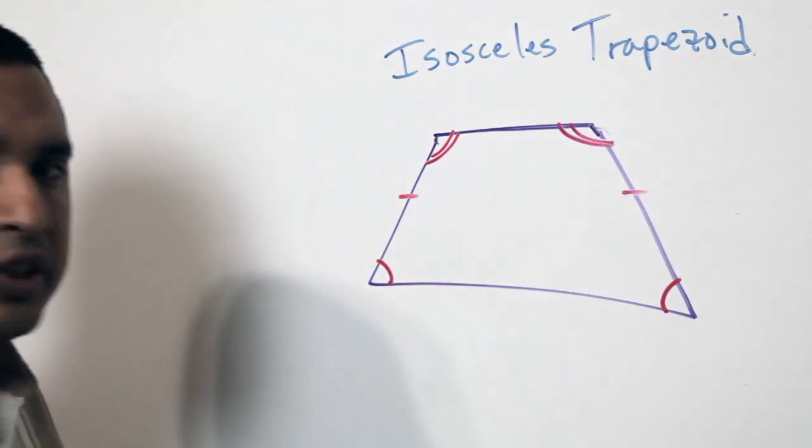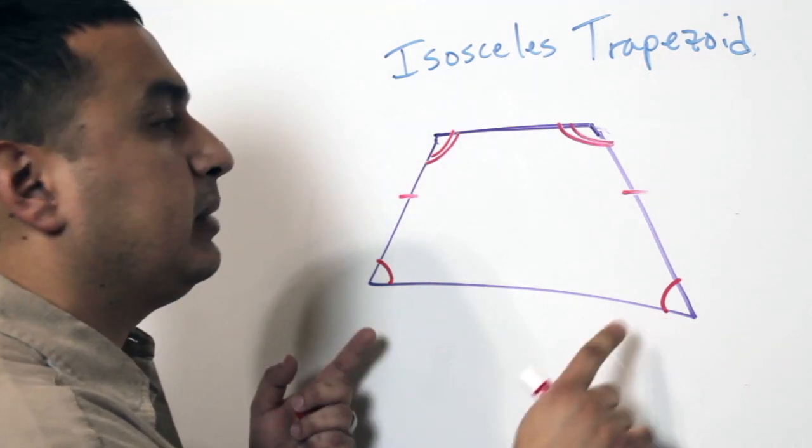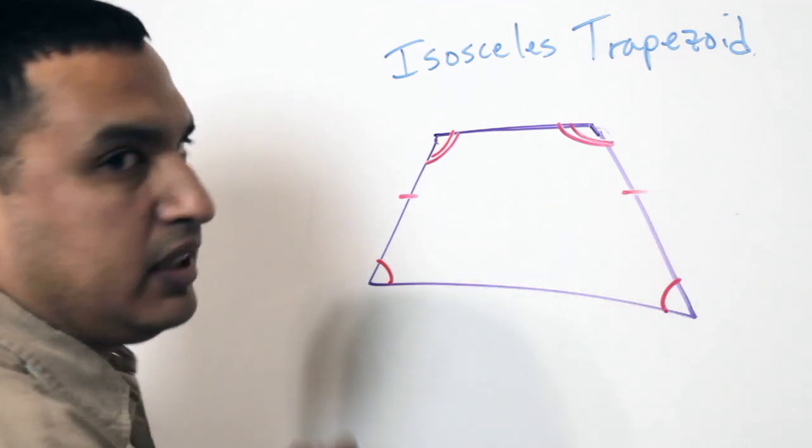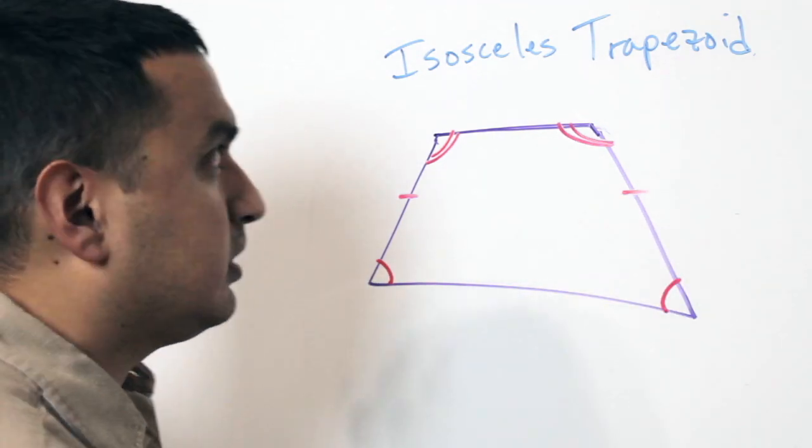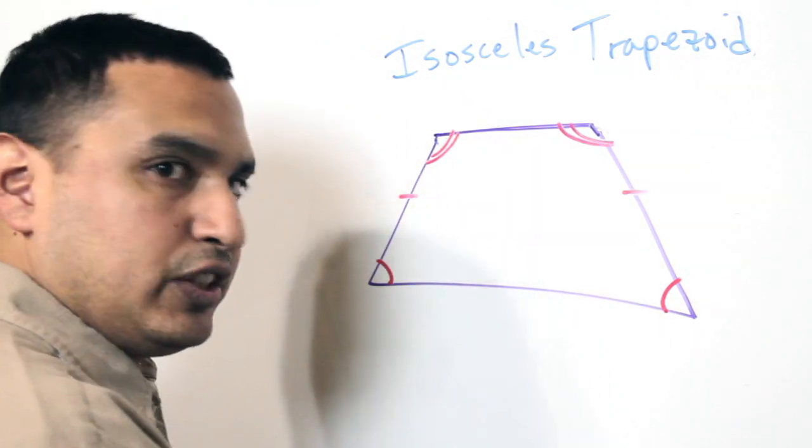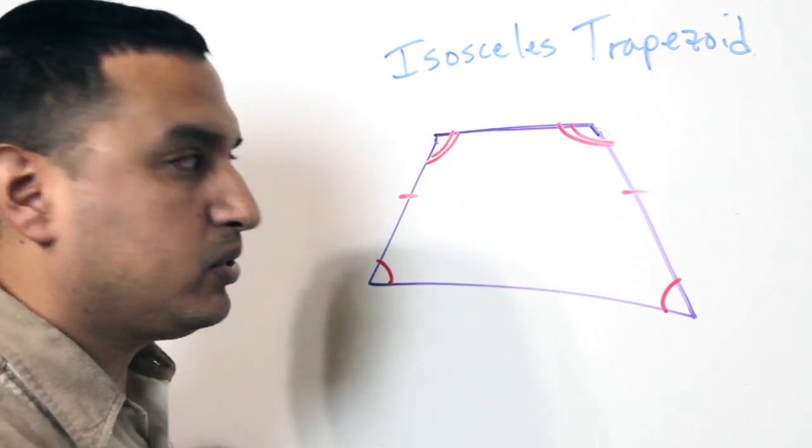Okay, it also works backwards. If I tell you that you have a pair of congruent base angles, that means that you know that you have an isosceles trapezoid and the legs are congruent. So it works both ways. If I tell you that it's isosceles, you know the base angles are congruent. If I just tell you that you have a trapezoid with base angles that are congruent, that means you have an isosceles trapezoid.